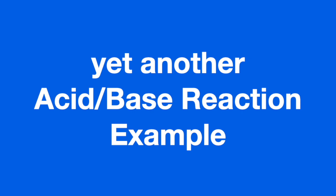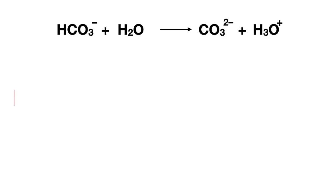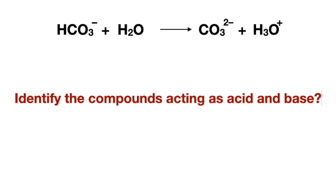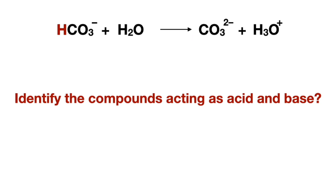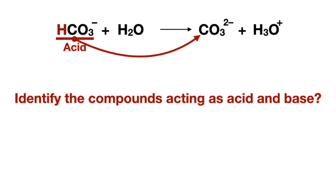In our next example, we again identify the acid and the base. Notice that the left reactant has a proton, and when we follow it to the product side, we can see that it donated the proton and became even more negatively charged, making it the acid and the other reactant the base. Note that earlier I said negatively charged compounds are generally bases; however, this compound was −1 charge in the reactants.